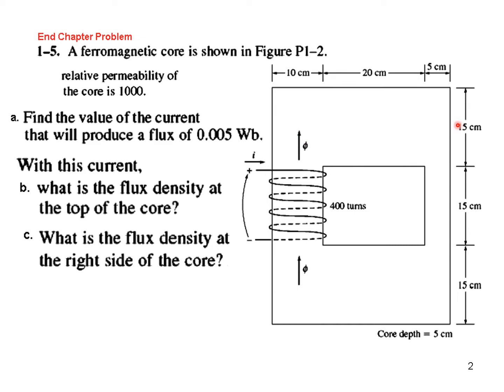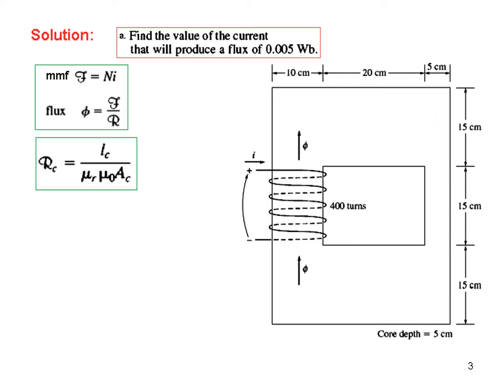So flux density we want to find here. And I hope you remember the flux density is flux per unit area. And similarly we have to find the flux density at the right hand side, so we have to find the flux density at this portion.